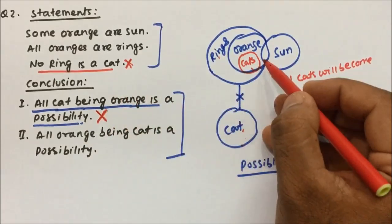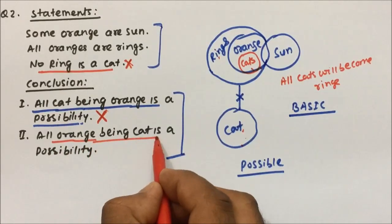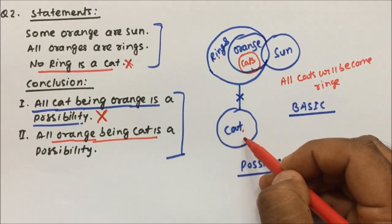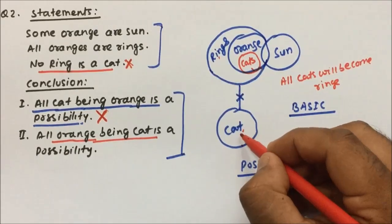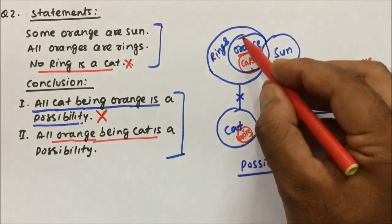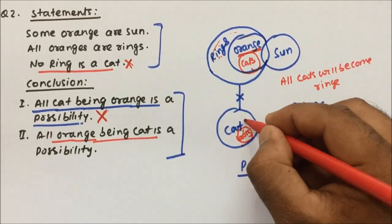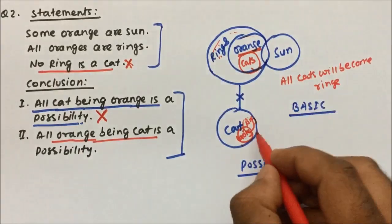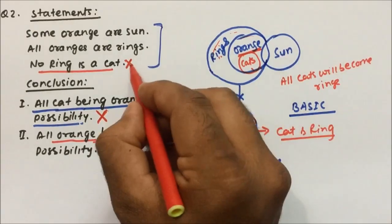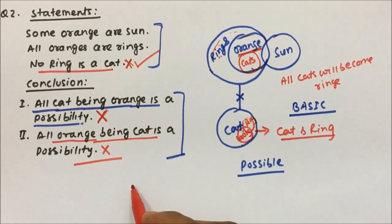Conclusion two: 'all orange being cat is a possibility' — can all oranges be placed inside the cat? If we try to place all oranges inside cat, the rings will also come along because all oranges are rings. Some part of ring will also come in, and then cat and ring will have a relation, which will violate statement three — no ring is a cat. So conclusion two is also false.